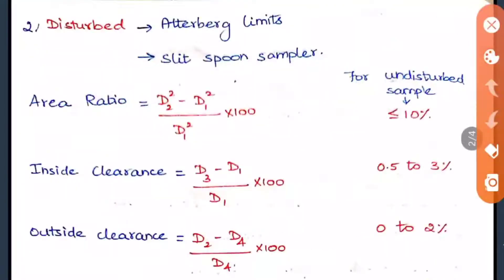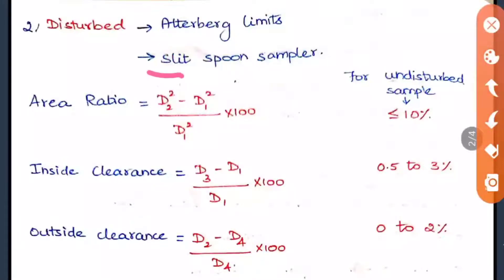Disturbed soil allows only index property tests, such as finding the Atterberg limits. Disturbed samples are taken using a split spoon sampler.